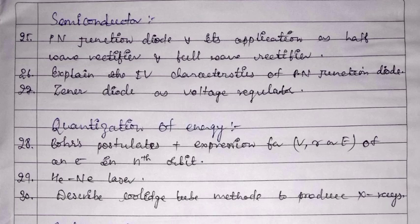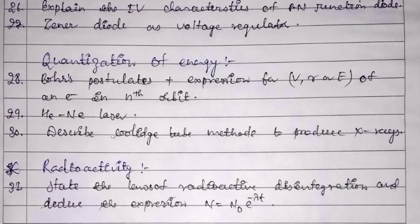In the quantization of energy chapter, Bohr's postulates are important, along with deriving expressions for the velocity and total energy of an electron in the nth orbit. Other important topics include helium-neon laser, the cooling tube method to produce X-rays, laws of radioactive disintegration, and deriving the expression N = N₀e^(−λt).